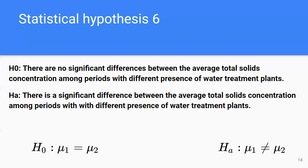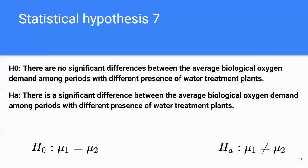Time frame one is before the introduction of water treatment plants, and time frame two is after. We will see if the average of this variable differs between those periods. The null hypothesis is that they are equal, and the alternative is that they are different. The seventh statistical hypothesis is the same as the sixth, but with biological oxygen demand.